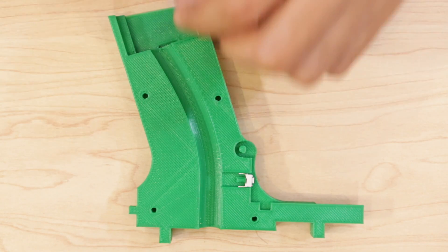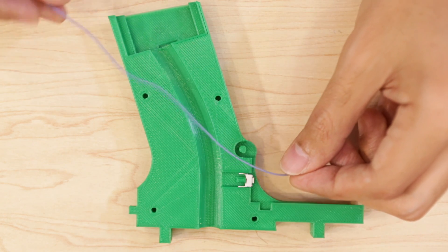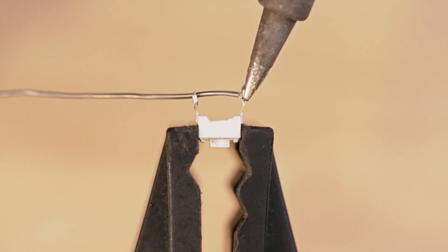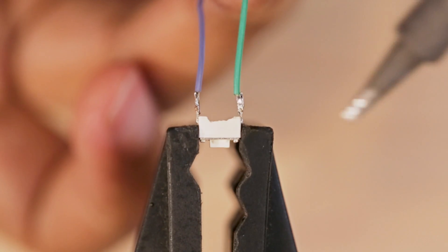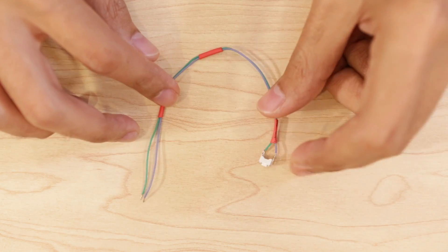Now onto the button, I fitted it into the handle so that I can measure the length of wires that I'll need. I only need 2 wires, one for each leg. Then I'll tin them up and solder them to the button. Once again, I used heat shrink tubing to keep the wires together.